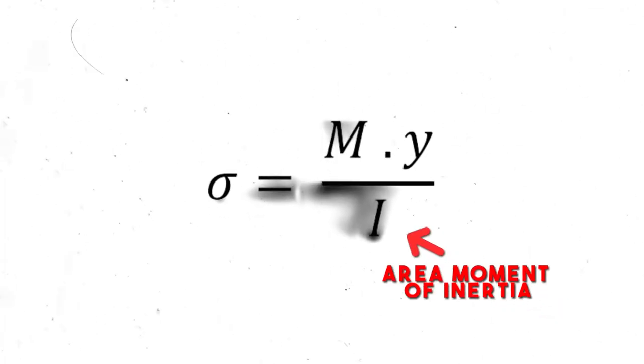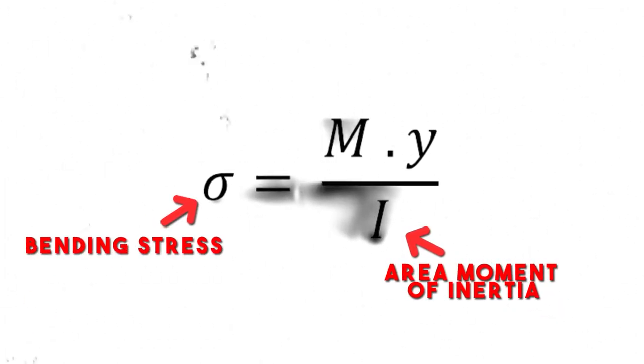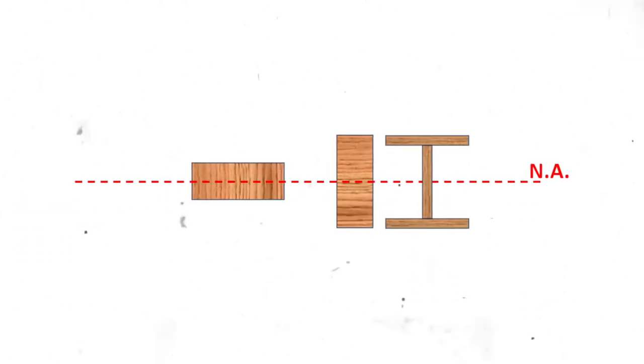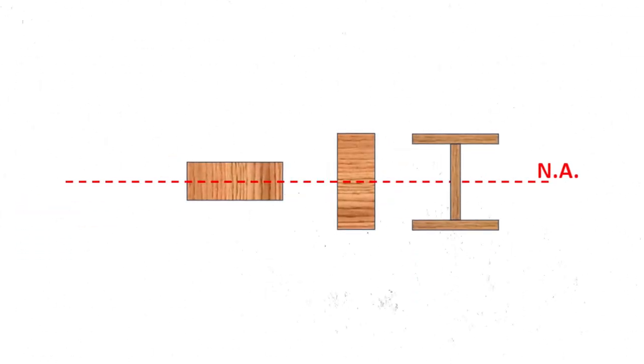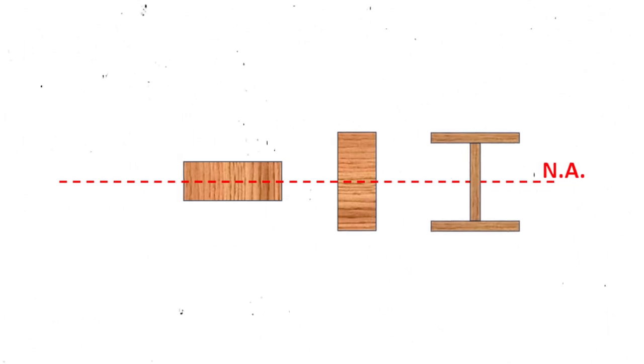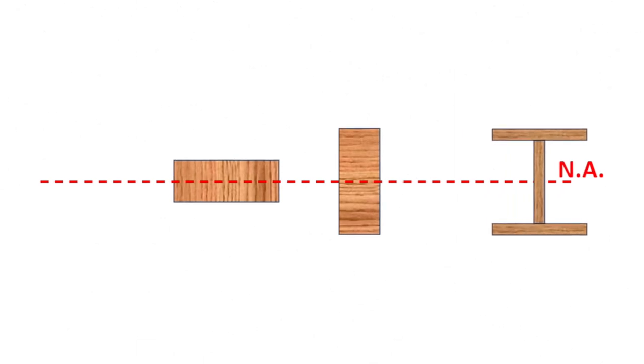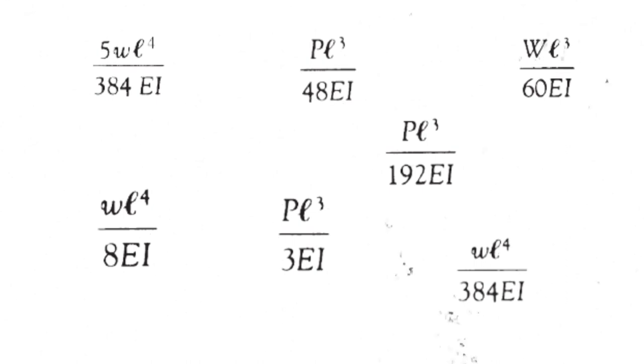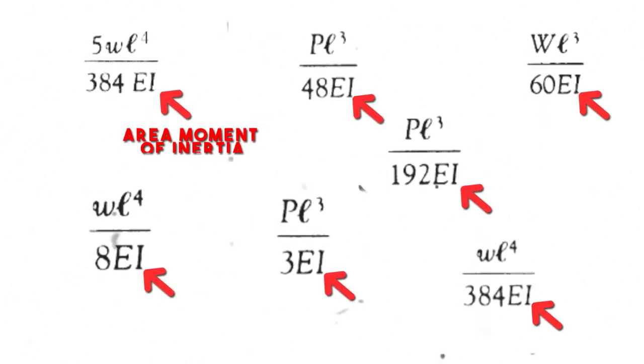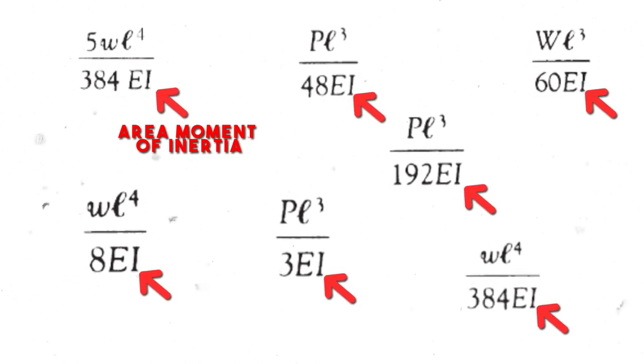For the engineers watching: bending stress equals moment times distance to the neutral axis, divided by the moment of inertia. In other words, the higher the moment of inertia of the beam's cross-section, the smaller its bending stress. The way you achieve a high moment of inertia is by placing material as far away from the neutral axis as practical — which is exactly what an I-shaped beam does. The same principle applies to deflection formulas, which always have the moment of inertia in the denominator, so the higher the moment of inertia, the smaller the deflection.